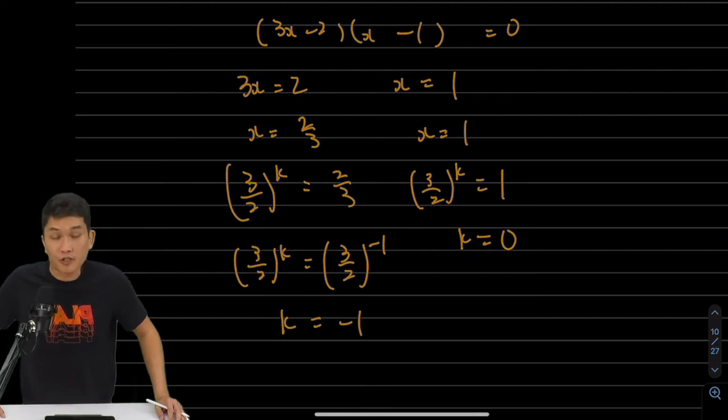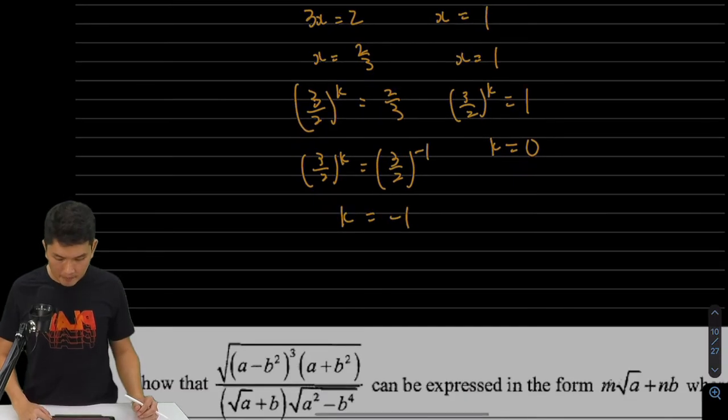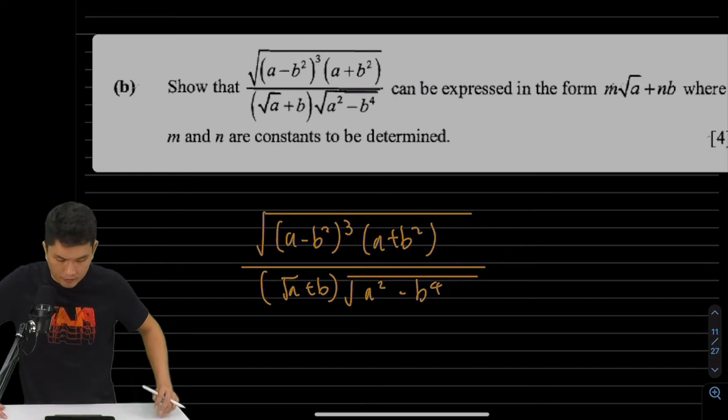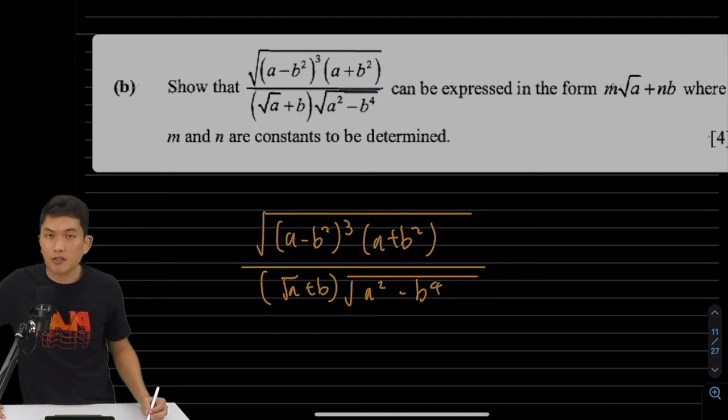Pretty cool question. So let's look at part B. In part B, we have to do a bit of search. We have to simplify this monstrous-looking fraction into this. And it's 4 marks. But the steps are actually surprisingly easy.